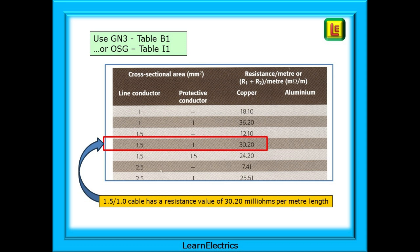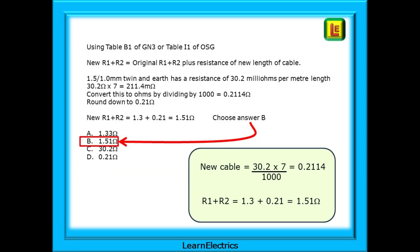Find 1.5 by 1 mm cable, as shown here. It tells us that this size cable has a resistance value of 30.2 milliohms per meter length. Now we can use that resistance value in a simple calculation to find the resistance of the new 7 meter cable, and then the total resistance of the whole circuit.